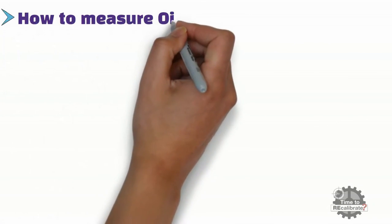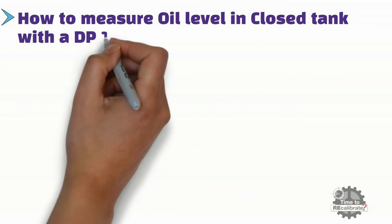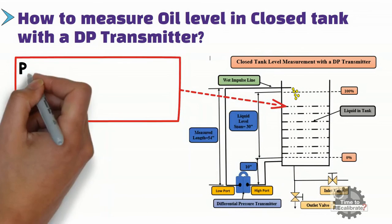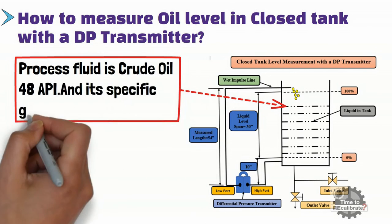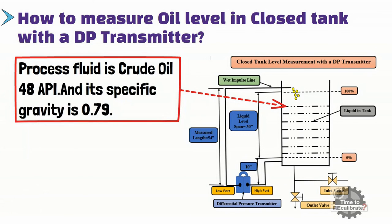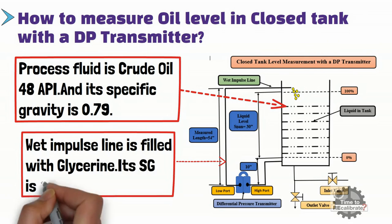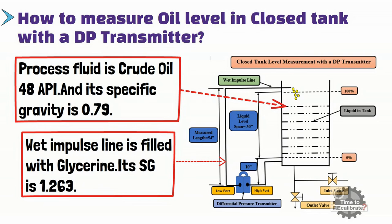Now, how to measure oil level in a closed tank with a DP transmitter? Let's assume that the process fluid is crude oil 48 API in this example, with a specific gravity of 0.79. The wet impulse line is filled with glycerin, and its specific gravity is 1.263. All remaining conditions are the same as the previous example: the DP transmitter is installed 10 inches below the 0% baseline, and the height of the wet impulse line is 54 inches.